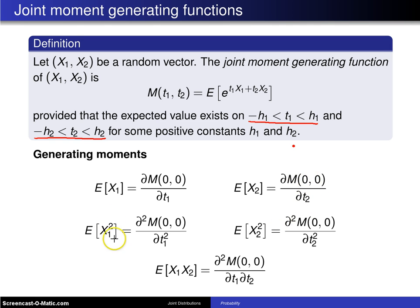To find the expected value of x1 squared, you take the second partial derivative with respect to t1 and then plug in 0, 0. Likewise for the expected value of x2 squared.